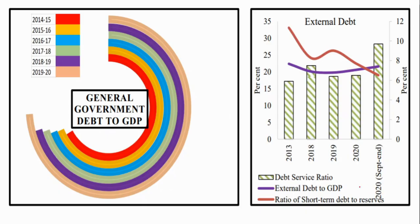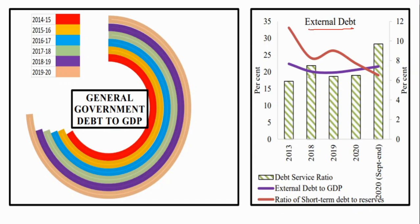Next, the government debt to GDP ratio. From 2014-15-16 it was increasing, with a major significant increase due to Covid. Regarding external debt, the first indicator is the debt service ratio, which has also increased.